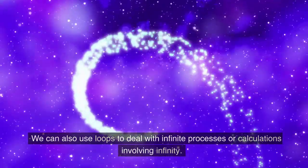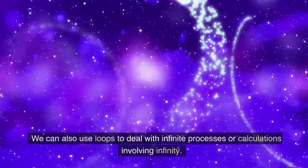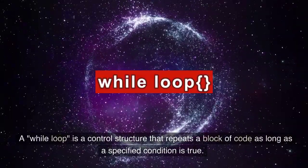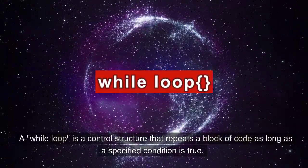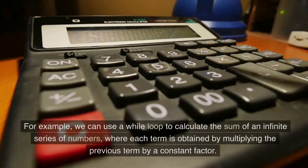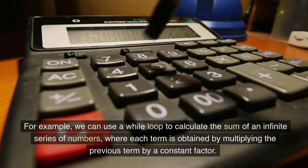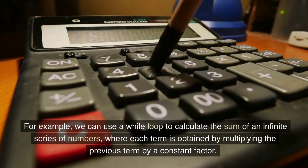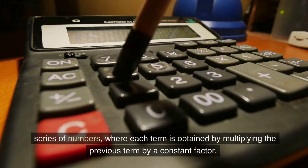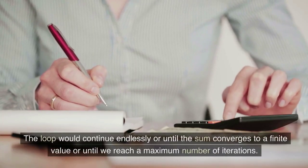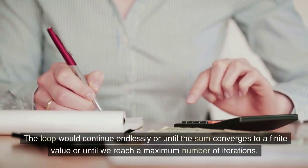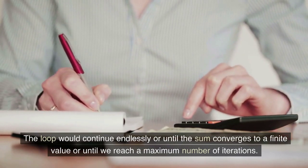We can also use loops to deal with infinite processes or calculations involving infinity. A while loop is a control structure that repeats a block of code as long as a specified condition is true. For example, we can use a while loop to calculate the sum of an infinite series of numbers, where each term is obtained by multiplying the previous term by a constant factor. The loop would continue endlessly or until the sum converges to a finite value or until we reach a maximum number of iterations.